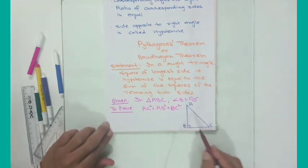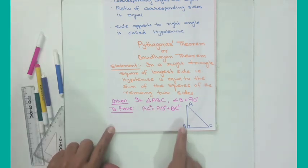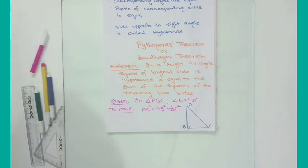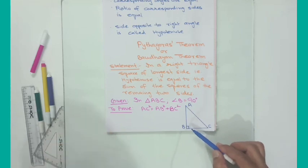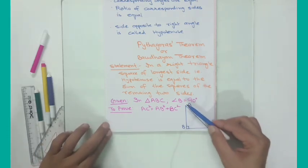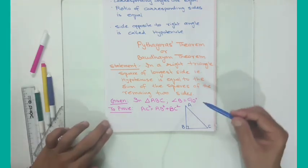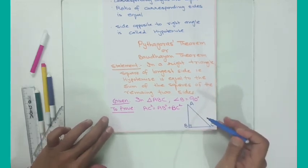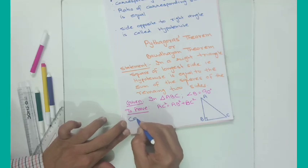In this triangle it is right-angled at B. So it is given that in triangle ABC, angle B is 90 degrees. What we have to prove is that the square of the longest side, that is AC — since the side opposite to the right angle is the longest side — AC² = AB² + BC². That is, AC squared is equal to the sum of the squares of the remaining two sides AB and BC.